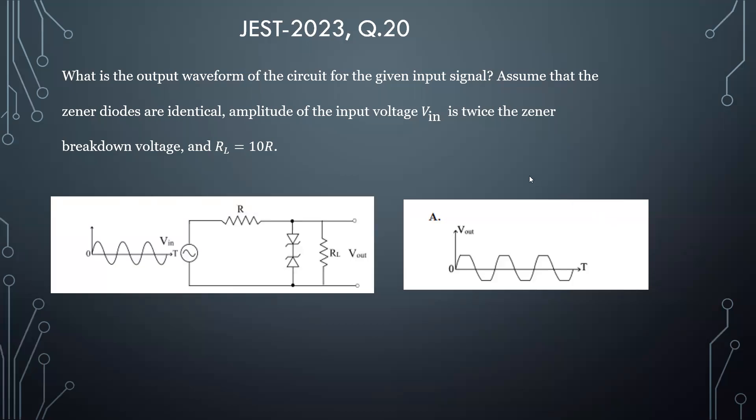Hello students, see this problem from JEST 2023, question number 20. Here you've been given an input voltage and it is said that the amplitude of input voltage is twice the zener breakdown voltage. So basically this is a zener clipper circuit. It will clip some portion of the input signal.